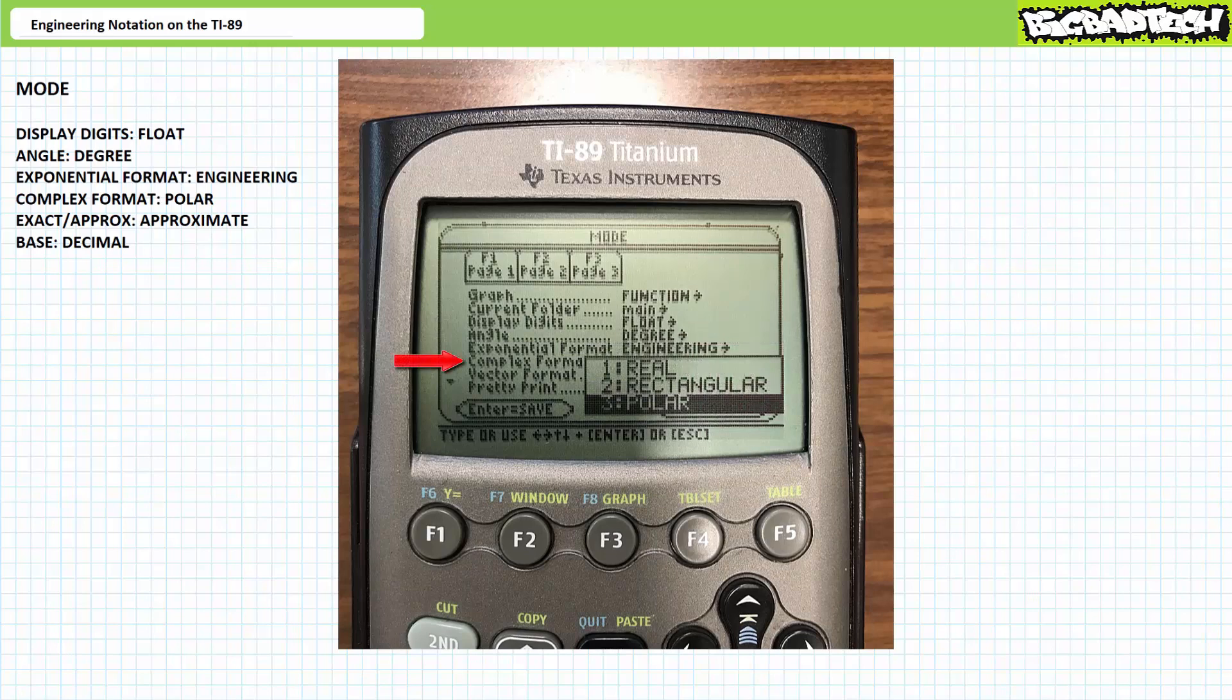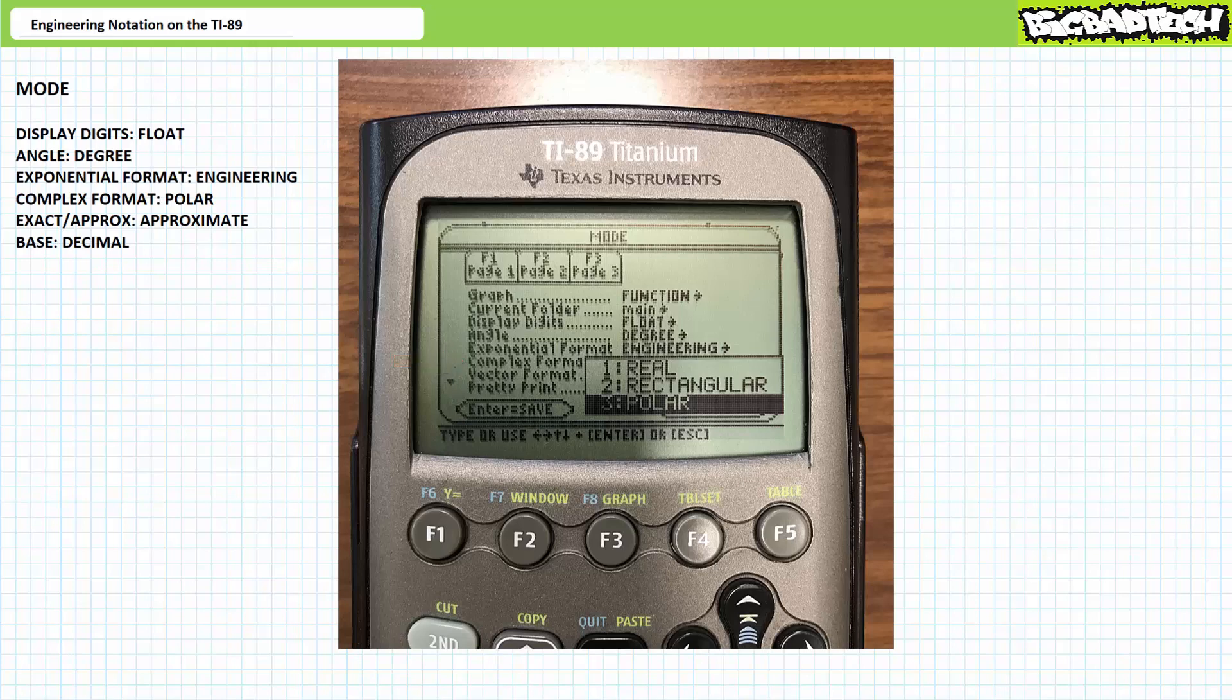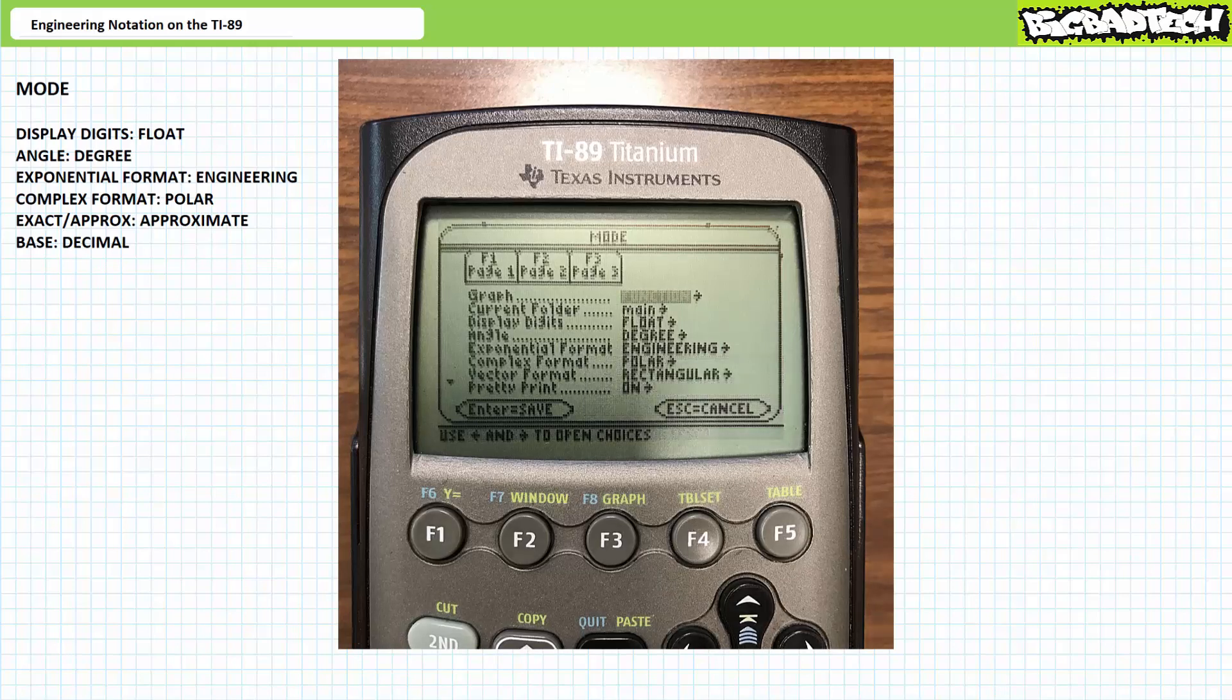Finally, on the F1 page, walk down to complex format using the down arrow key and press the right arrow key to access the menu. Walk down the list with a down arrow key. The option I'm going to choose is three, polar. Press enter to save this option. What did we just do?